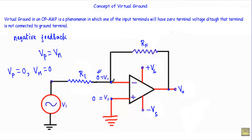Therefore we consider that this terminal is not connected to any ground terminal, but it is a virtually grounded terminal, which makes this terminal voltage equal to zero volts. This is the concept of virtual ground — this terminal is not connected to any real ground, but due to virtual ground this terminal has a voltage of zero volts.